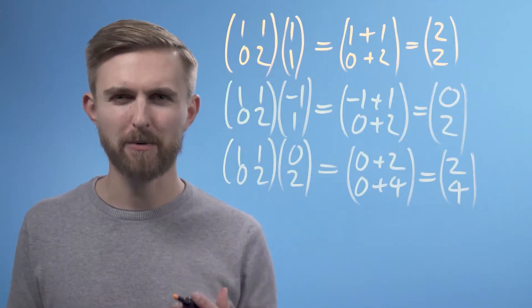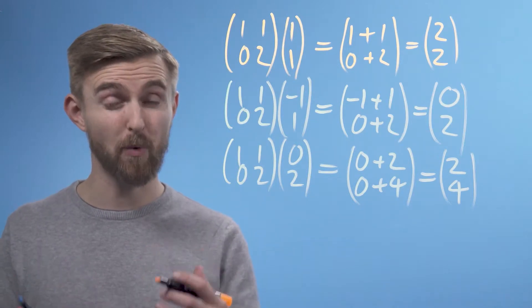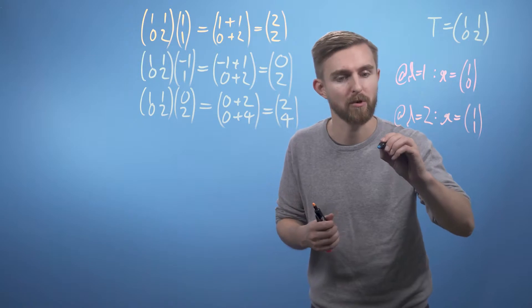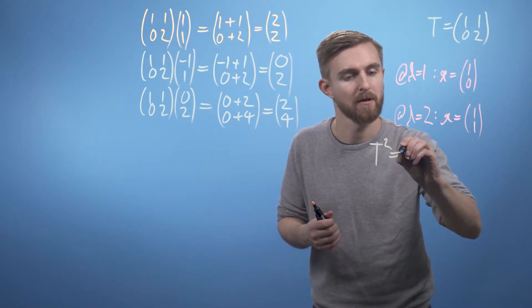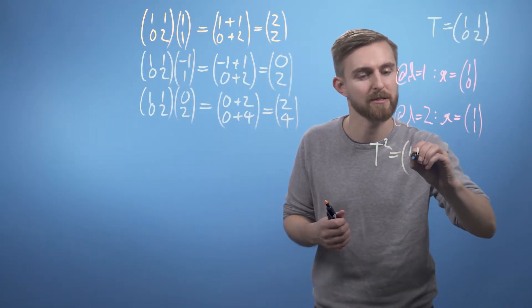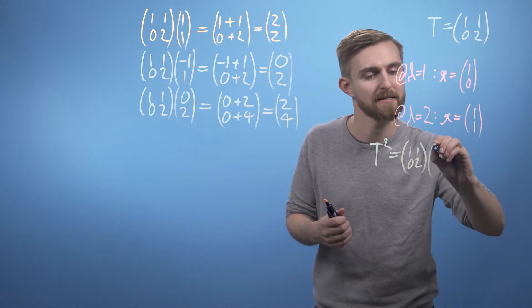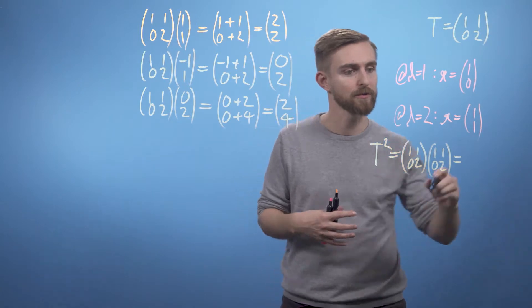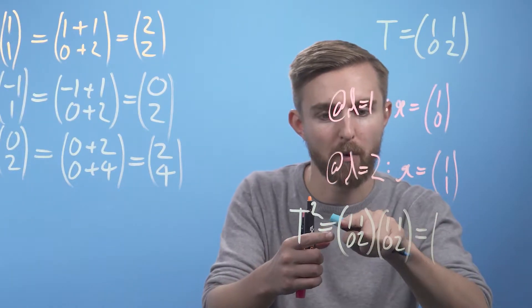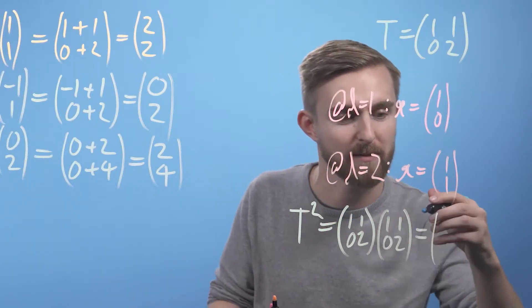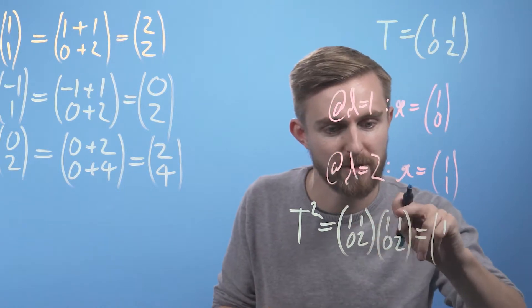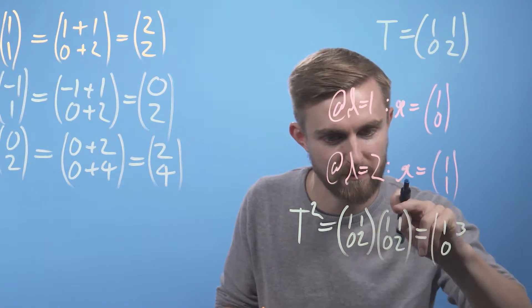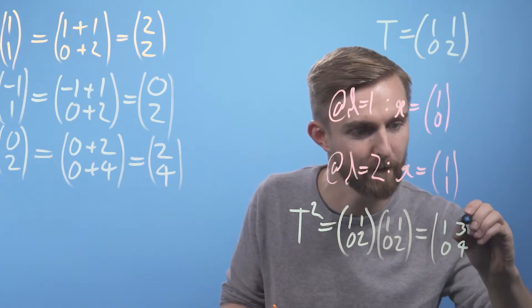Now instead, if we were to start by finding T squared, so T squared is going to equal this matrix multiplied by itself. Applying rows times columns we're going to get 1 times 1 plus 1 times 0, so that's 1. Rows times columns here we're going to get a 3. Rows times columns here we're going to get a 0. Rows times columns here we're going to get a 4.